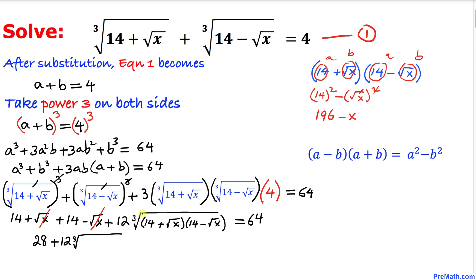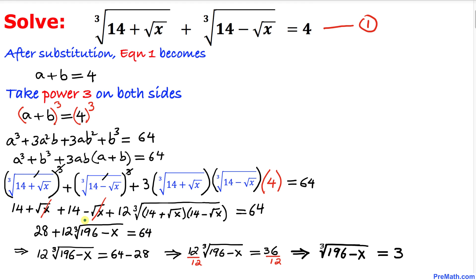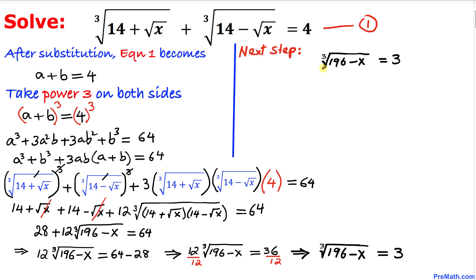Now reverting back to our equation, we have 12 times the cube root of (196 minus x) equal to 64. After basic algebraic manipulation, we isolate the cube root part and find that the cube root of (196 minus x) equals 3.